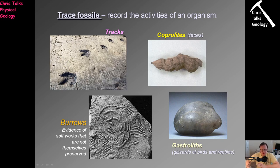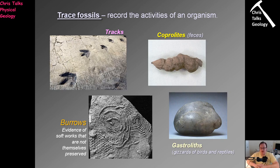Burrows can also be quite helpful — look at this wonderful honeycomb burrow with spiral shapes. If we know the species that makes the burrow, that tells us quite a lot about conditions. We also have coprolites, which are fossilized feces. Most coprolites are more recent because older ones are more likely to have been destroyed. Coprolites can be quite helpful — sometimes you can see parts of whatever the organism was eating, and sometimes you can extract things like pollen grains, telling you about the types of plants living in the area.